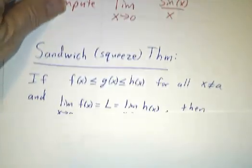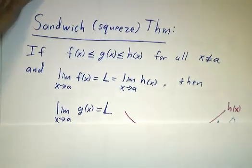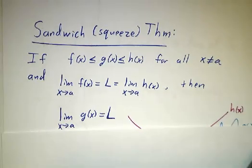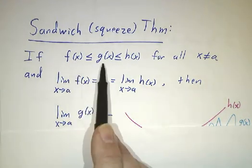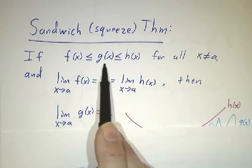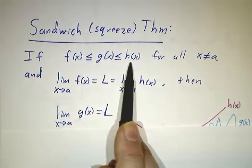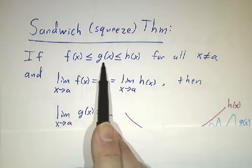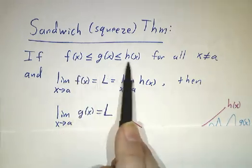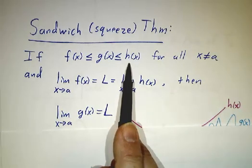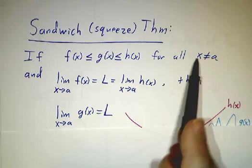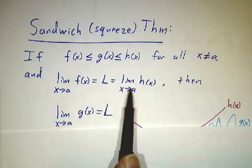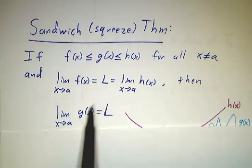So, just a recap of what we learned about limits. We have the sandwich theorem, sometimes called the squeeze theorem. If you have three functions and the function g is sandwiched between f and h — g is always in the middle, bigger than f and less than h for all points near A except A — and if the limit of f and the limit of h are both L, then the limit of g also has to be L.